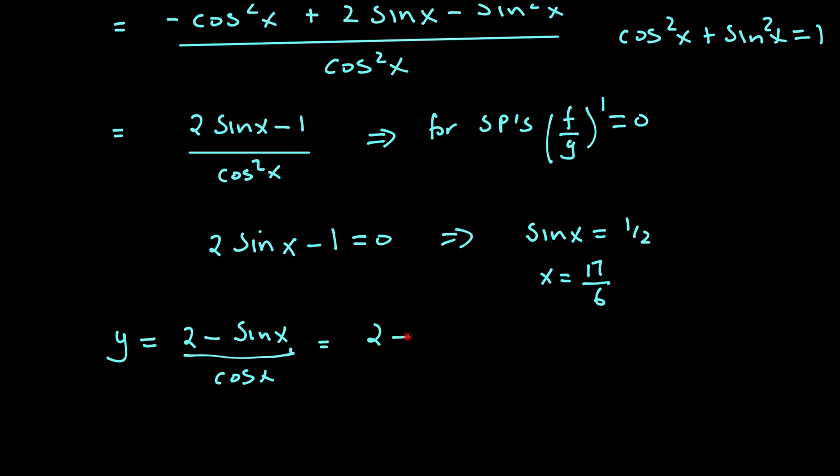That would give me (2 - sin(π/6)) / cos(π/6). So sin(π/6) is simply just 1/2, and cos(π/6) is √3/2. And that would simplify down to √3.